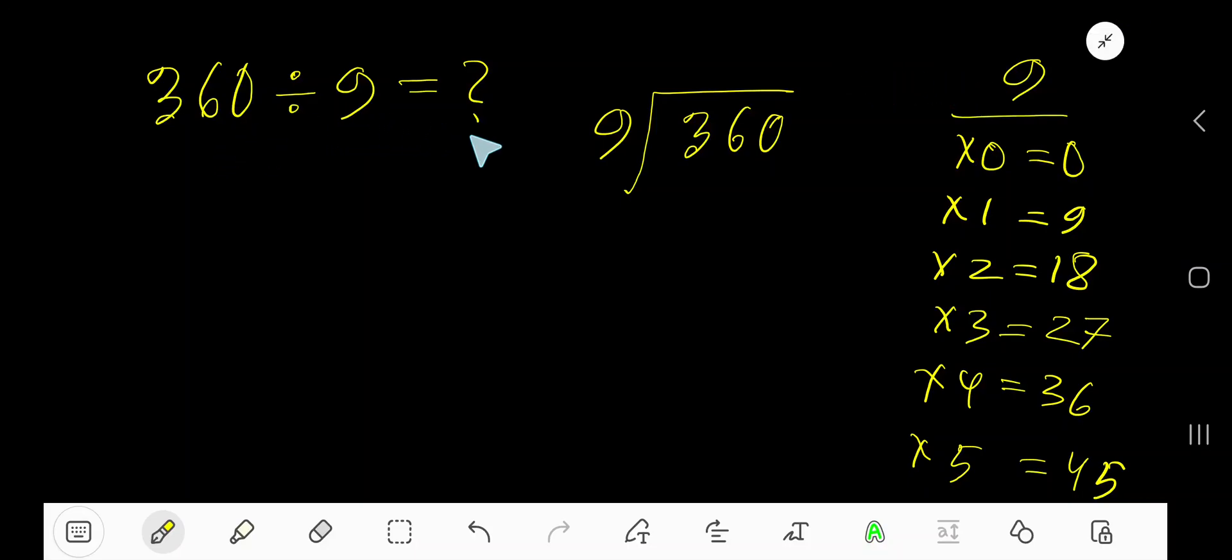360 divided by 9. Here 9 is a divisor, so we need the multiplication table of 9. 9 times 0 is 0, 9 times 1 is 9, 9 times 2 is 18, then 9 times 3 is 27.